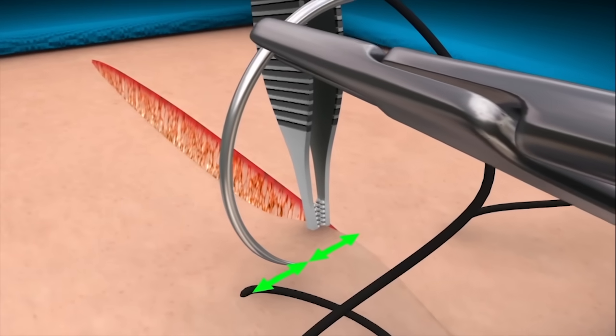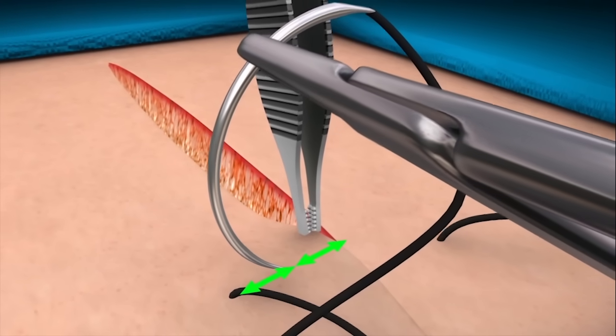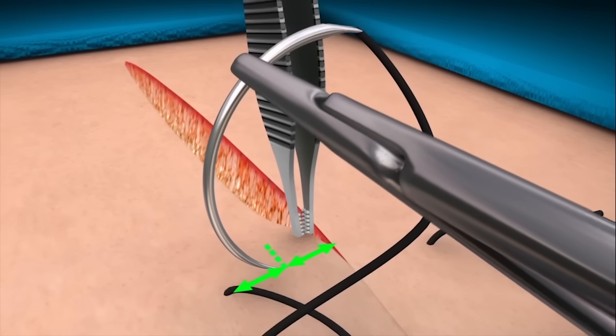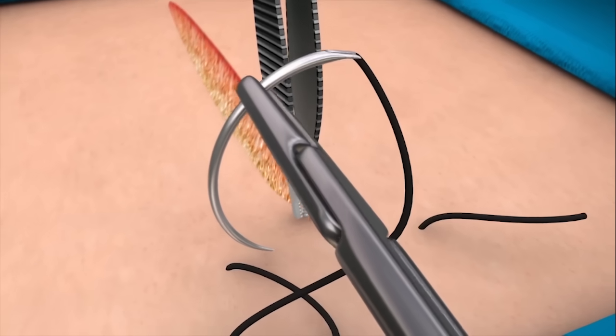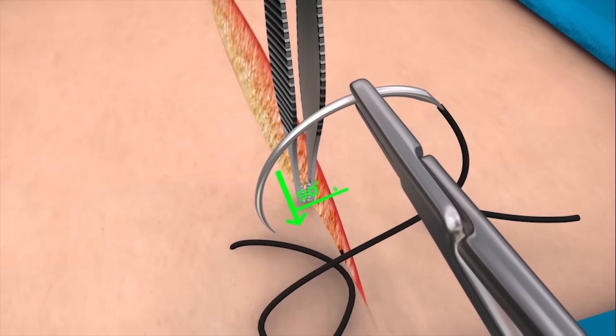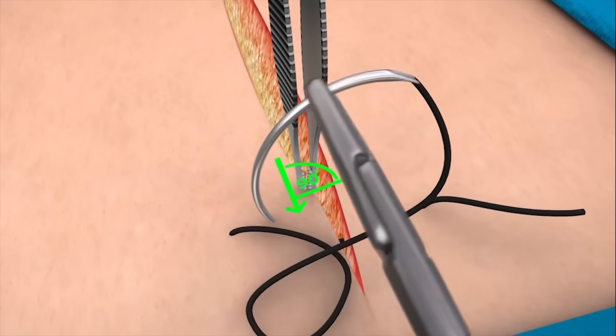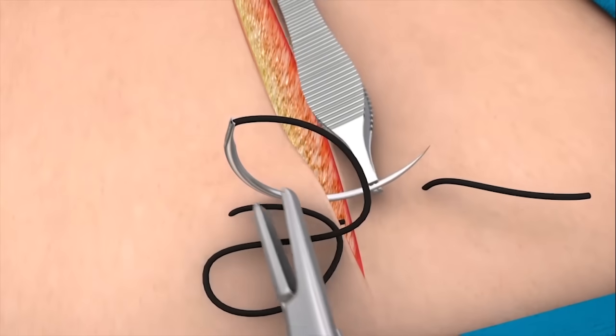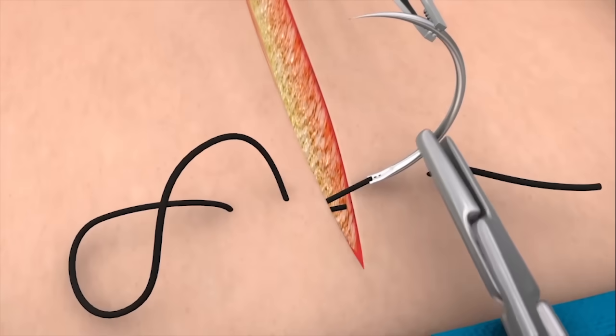Now take a small bite approximately halfway between the exit point and the skin edge. Using the backhand technique, enter the needle at 90 degrees to the skin and rotate the needle through the tissue by pronating the forearm.